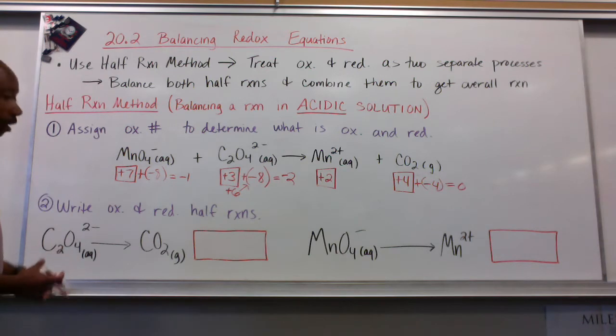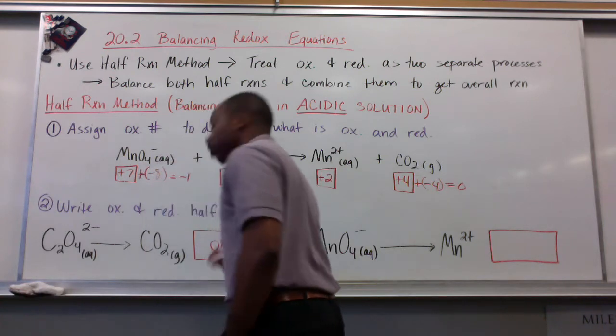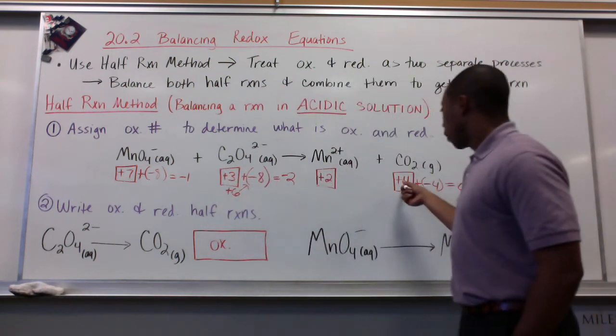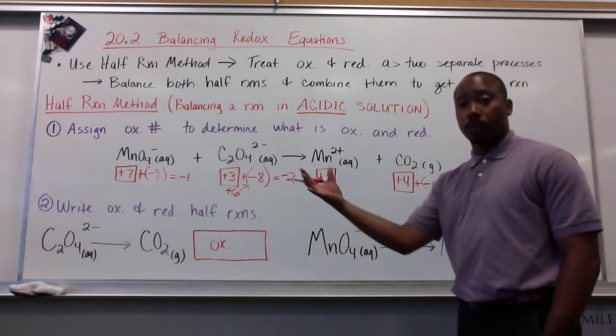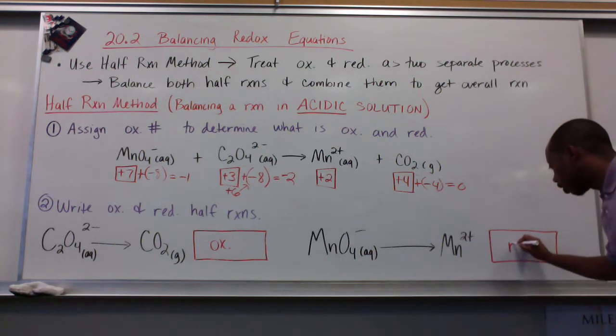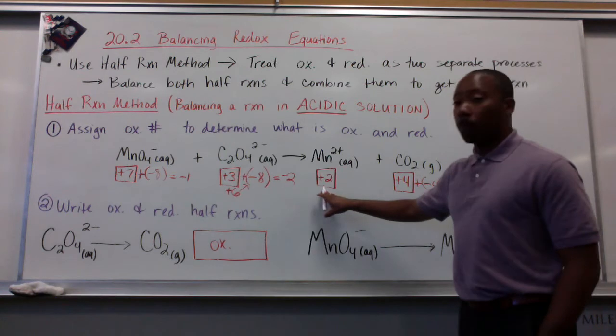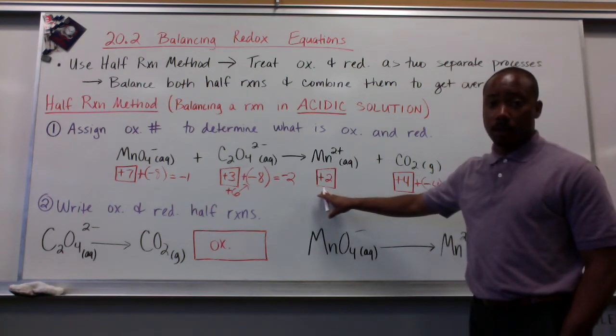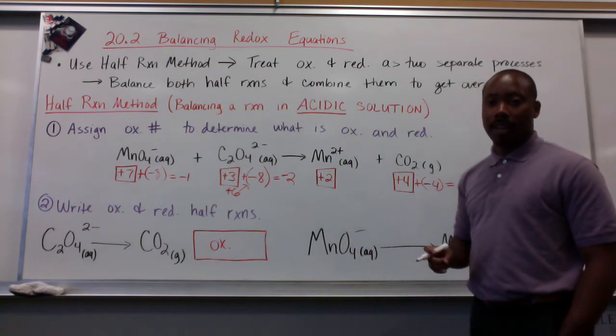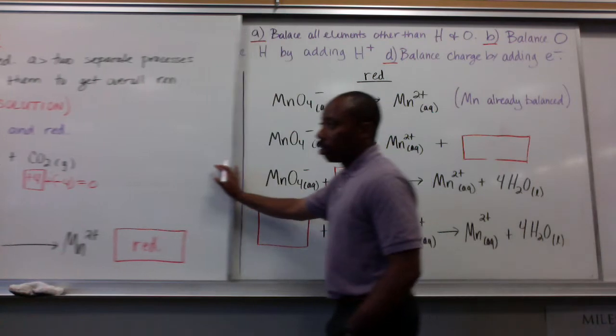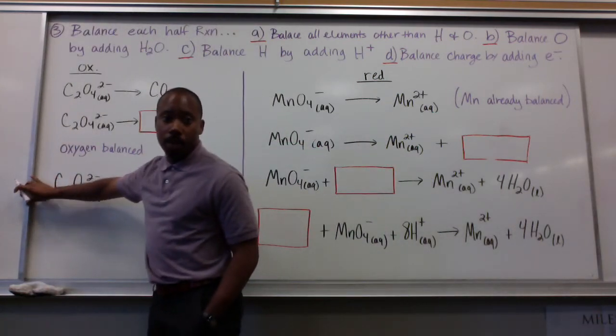Our second step for this half-reaction method is to write oxidation and reduction half reactions separately. I see that C2O4 2- goes to CO2. This represents oxidation. Oxidation is losing electrons, OIL, right? From here to go from plus 3 to plus 4, you had to lose something negative to increase in your positive. And here, going from permanganate to manganese 2+, this has to be reduction by default. Reduction is losing electrons. We went from plus 7 to plus 2. If you're going from plus 7 and becoming less positive, that means you're becoming more negative. So you've gained electrons with reduction.